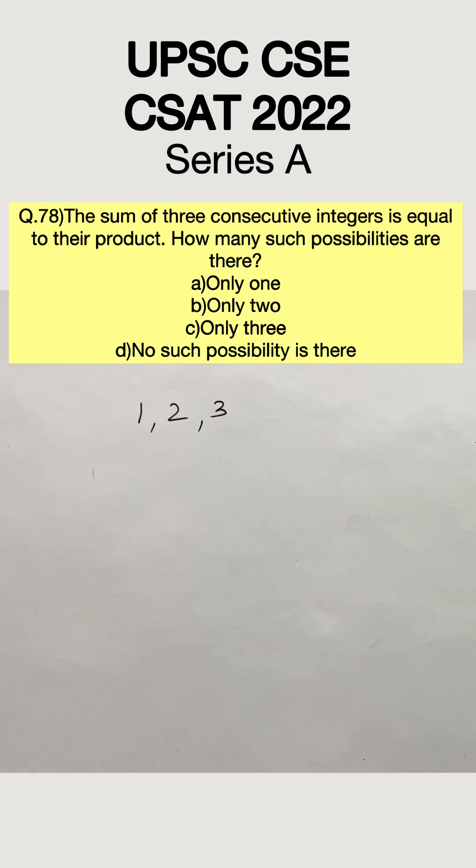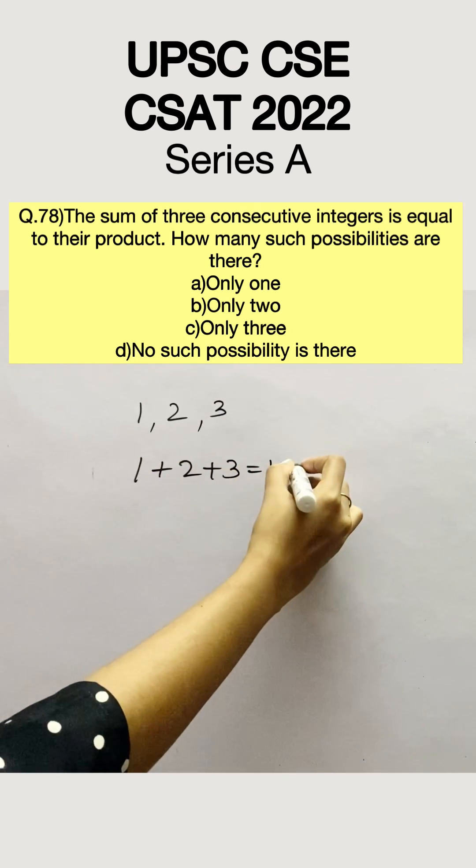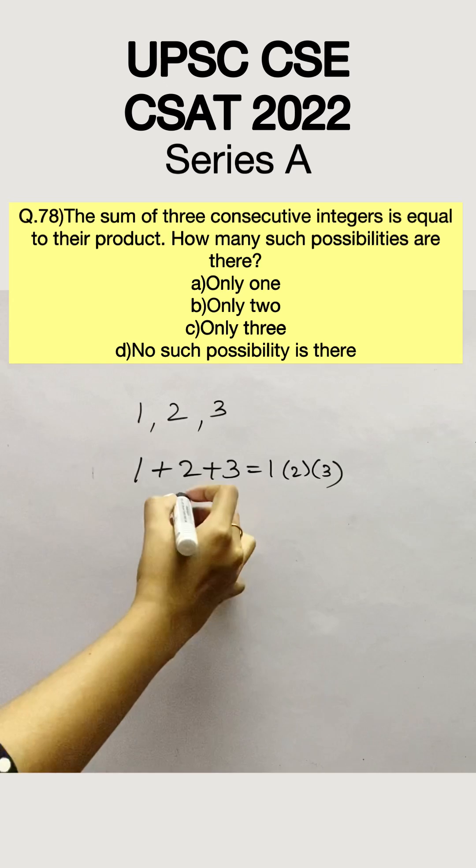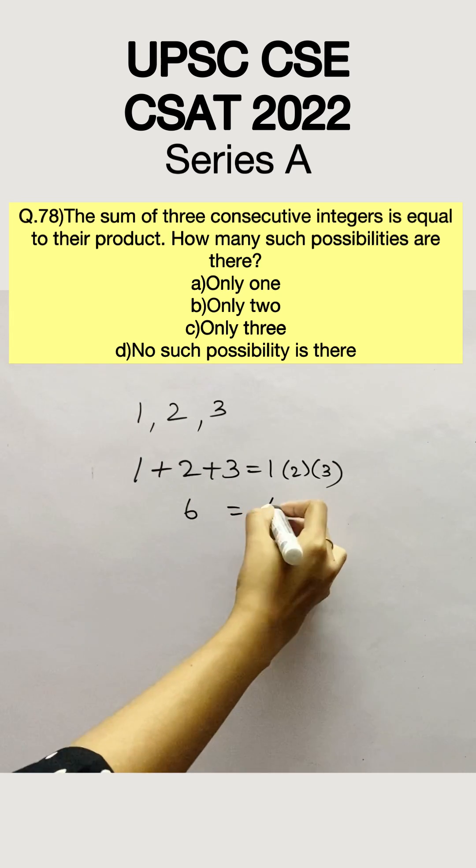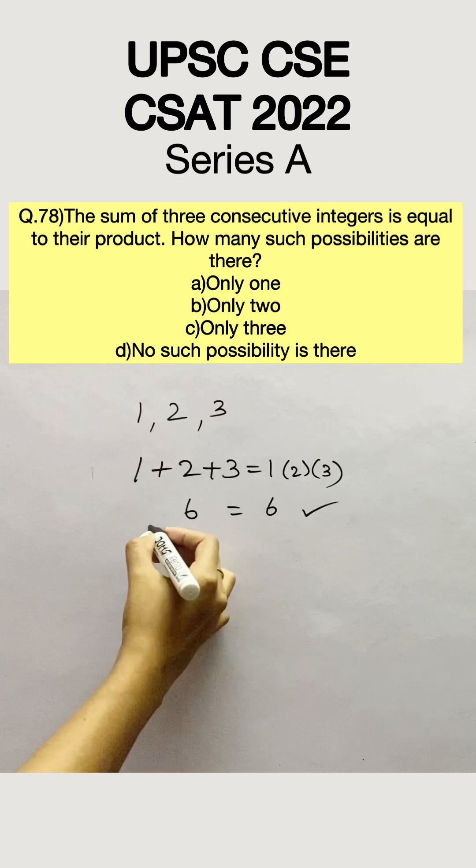Adding 1, 2, 3 should give the same answer as multiplying 1, 2, 3. So 1 plus 2 plus 3 equals 1 into 2 into 3. 1 plus 2 plus 3 equals 6. 1 into 2 into 3 also equals 6. So this satisfies the given condition.